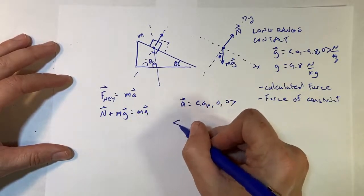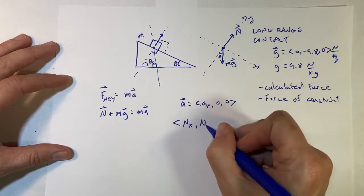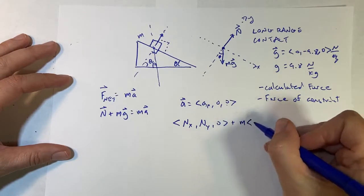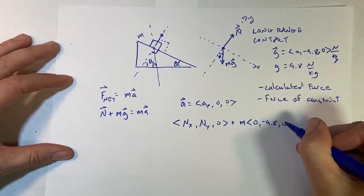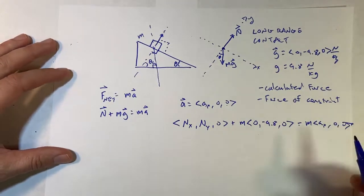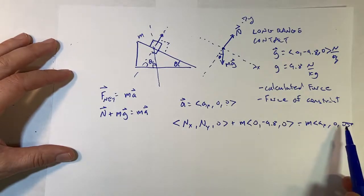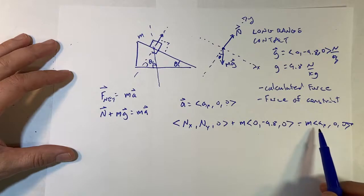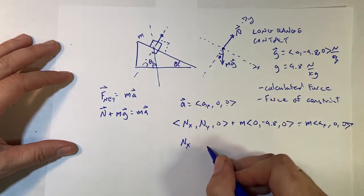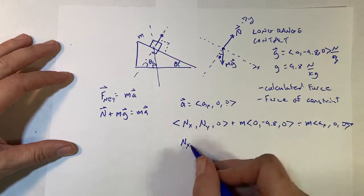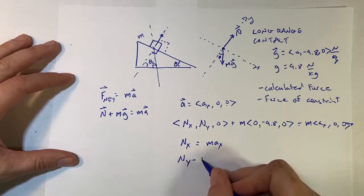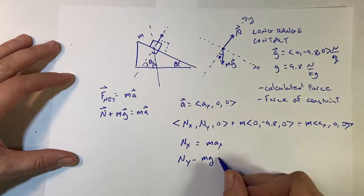Let's just write this equation out as a vector. So I have NX, NY, and there's no force in the Z direction, zero plus M times zero negative nine point eight zero. I'm leaving off the units equals M AX zero zero. Now in order for this vector equation to work, the X components all have to be equal, the Y components have to all be equal. So let's just write out the X component. So I get NX plus zero equals M AX.